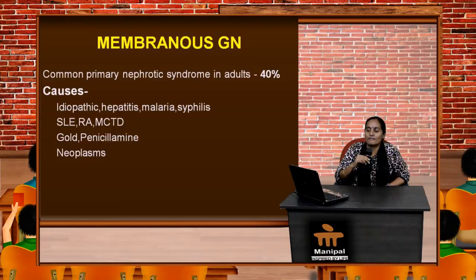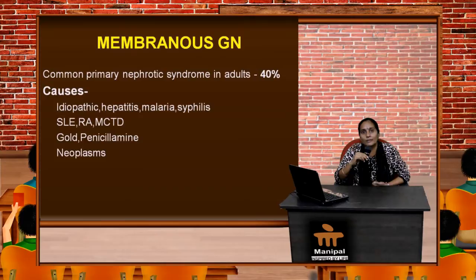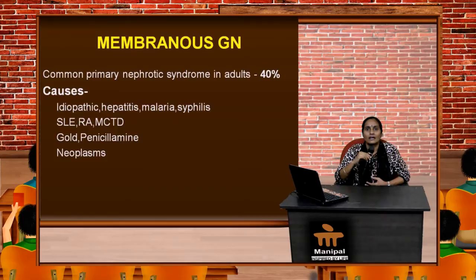The next entity is membranous glomerulonephritis, which is the most common primary nephrotic syndrome in adults, accounting for around 40% of cases. The causes can be idiopathic — no known cause — or secondary to hepatitis, malaria, syphilis, SLE, rheumatoid arthritis, mixed connective tissue disorders, usage of gold, penicillamine, and certain neoplasms.